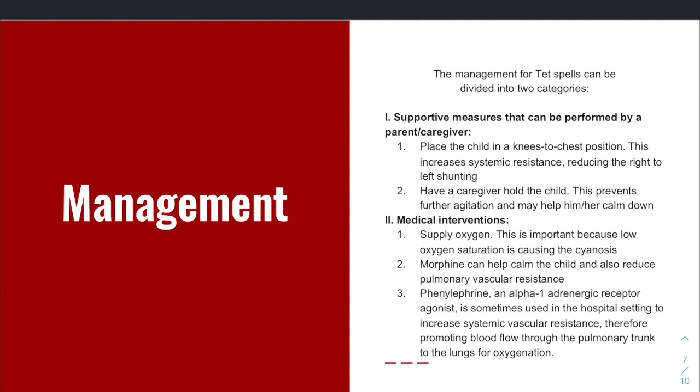Oxygen is important. Pain management or use of morphine to reduce pulmonary vascular resistance is also a good thing. Remember, we have that right ventricular outflow tract narrowing. So by decreasing pulmonary vascular resistance, you're helping reduce some of that resistance going through the right ventricular outflow tract. Phenylephrine, which is an alpha-1 adrenergic receptor agonist, can be used, which increases your systemic vascular resistance and then promotes blood flow. That promotes blood flow through the pulmonary trunk, and that's going to promote oxygenation and reduce the risk of cyanosis.